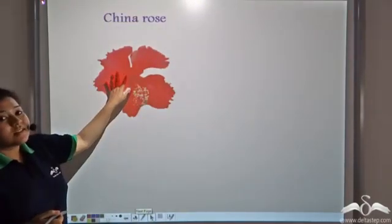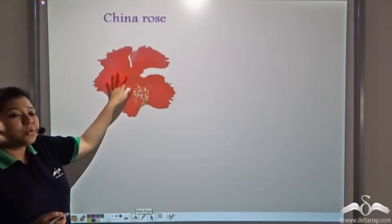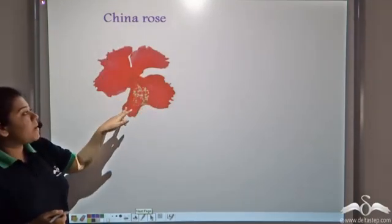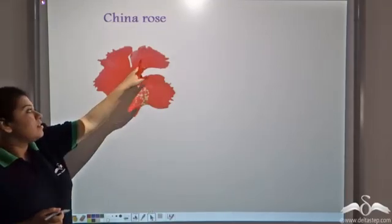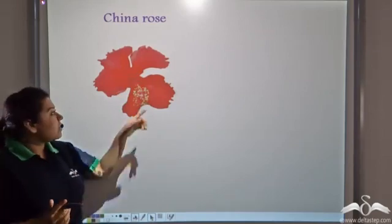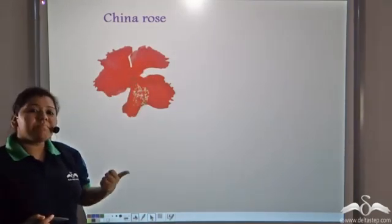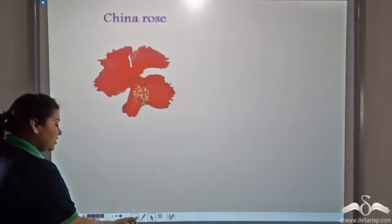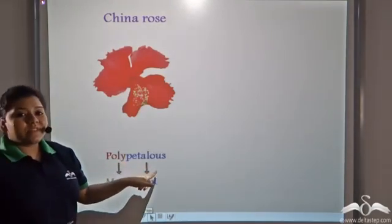Now, look at this flower. This flower is known as china rose. Notice the petals. See, the petals are all free from each other, at a distance from each other, and there are many petals. So, these flowers are known as polypetalous flowers. Poly means many and petalous comes from the word petals.